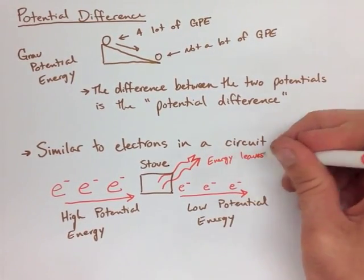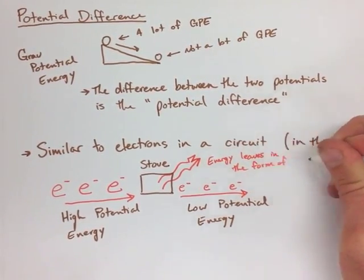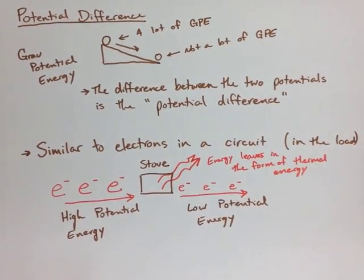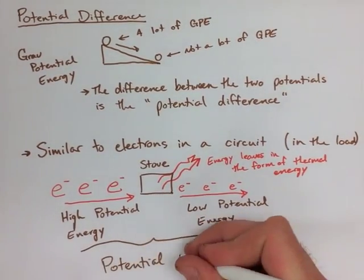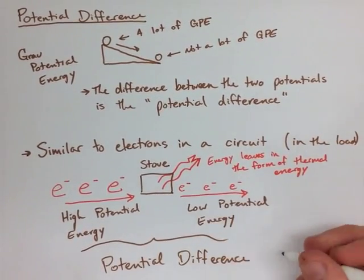Now, with that being said, we can look at the difference between these two values, the high potential energy before, the low potential energy after, and find the potential difference. This is also known as voltage.